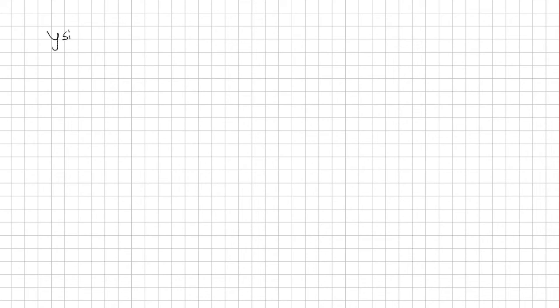If y·sine(2y) is equal to x·cosine(2x), then what is dy/dx at the point (π/4, π/2)?